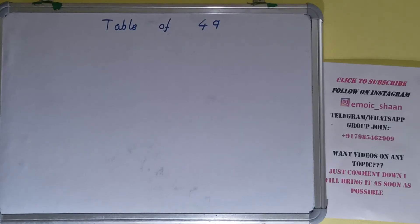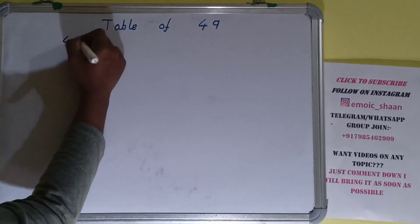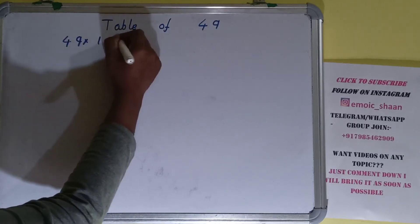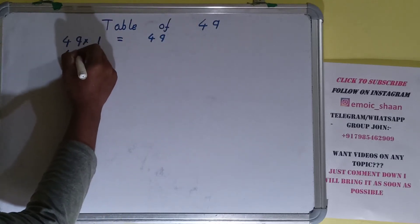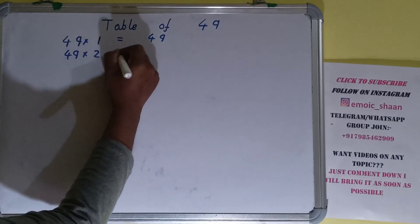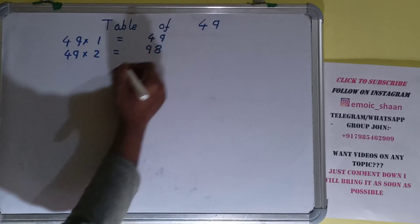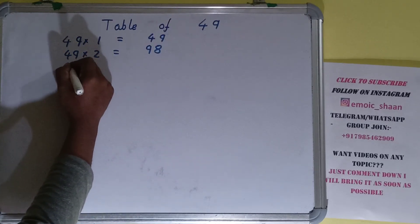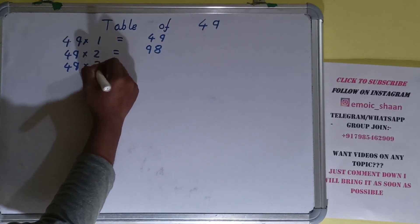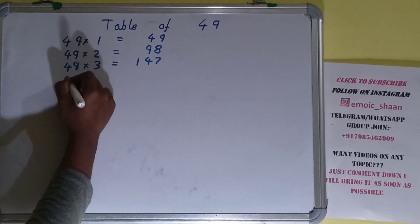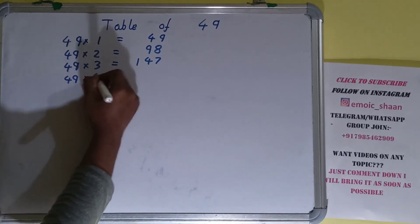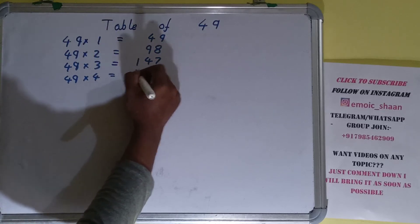Hello friends, in this video I will be helping you with the table of 49. So let's start. 49 into 1 is 49, 49 into 2 is 98, 49 into 3 is 147, 49 into 4 is 196.